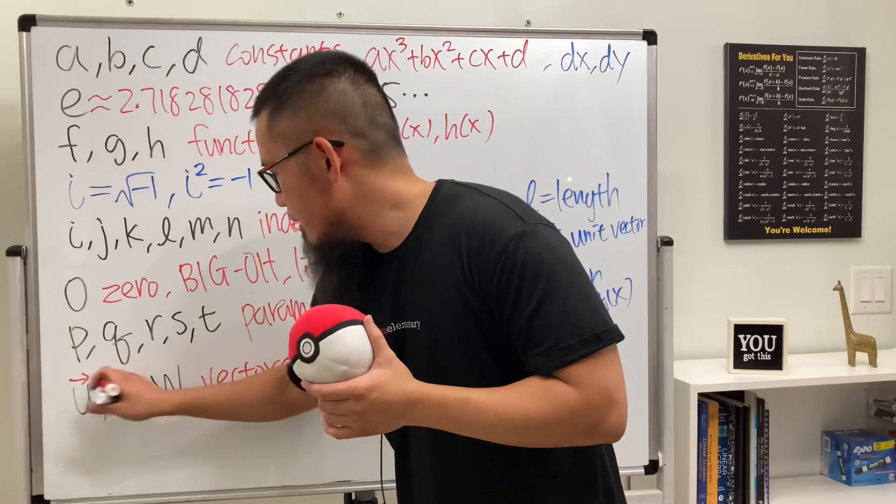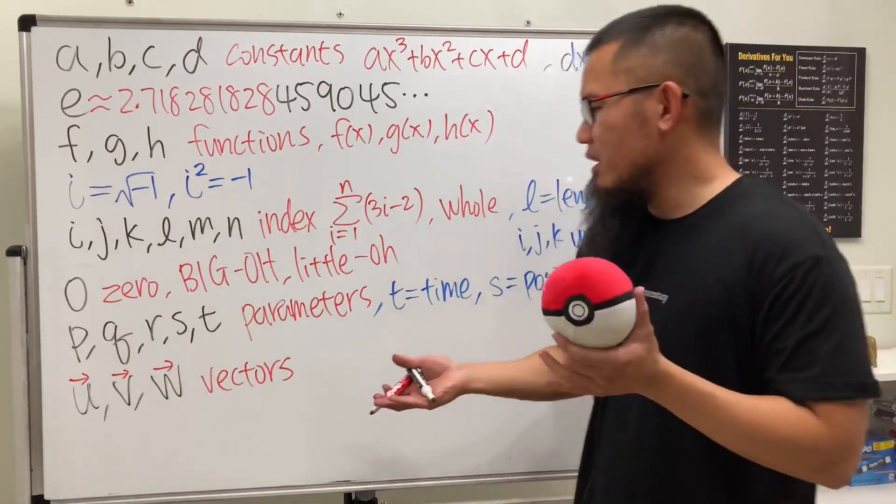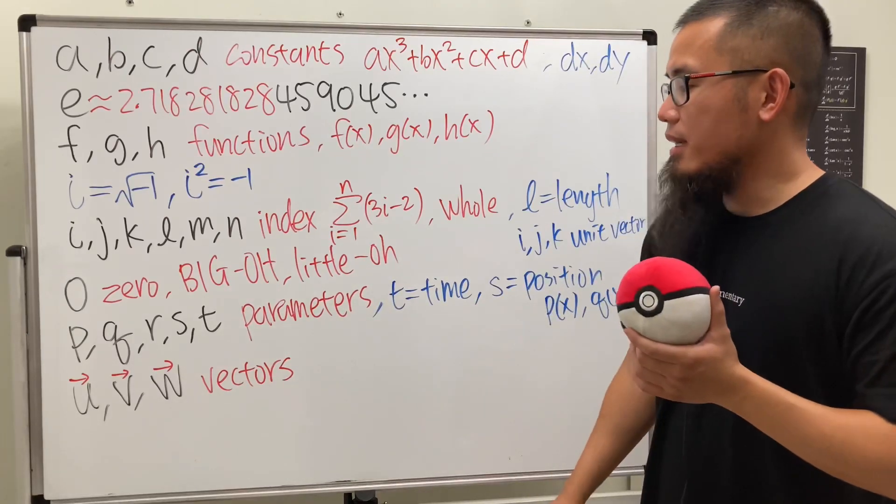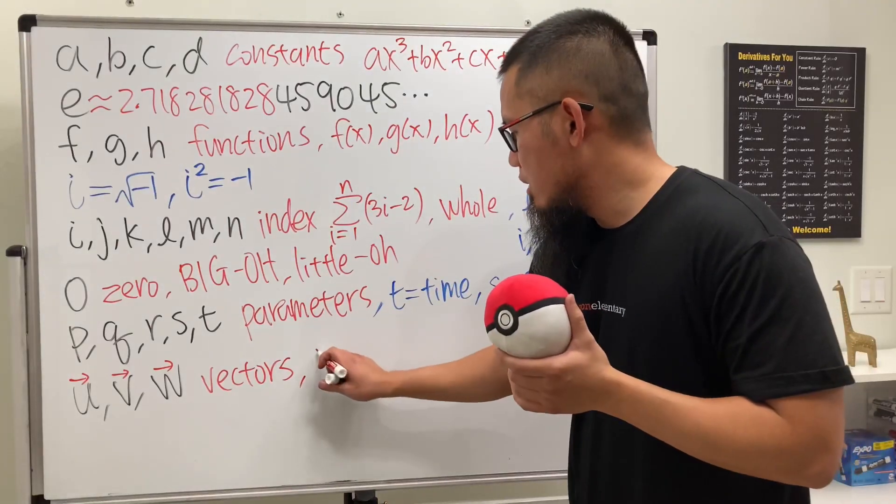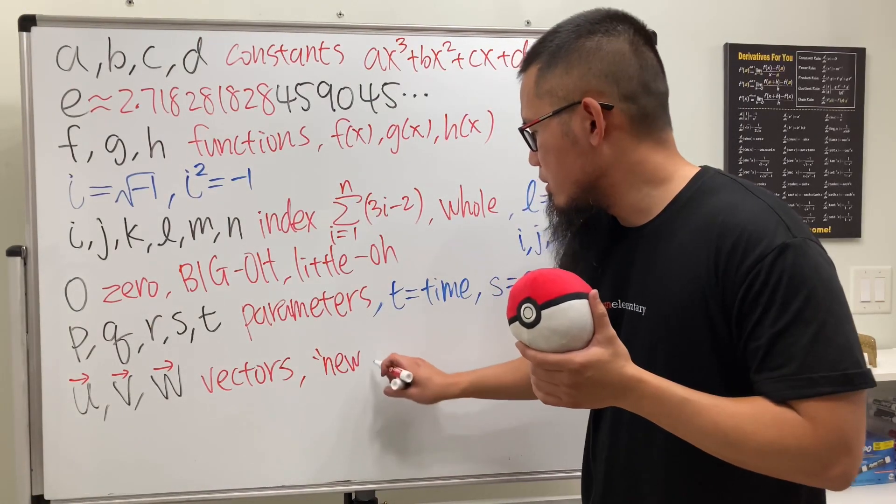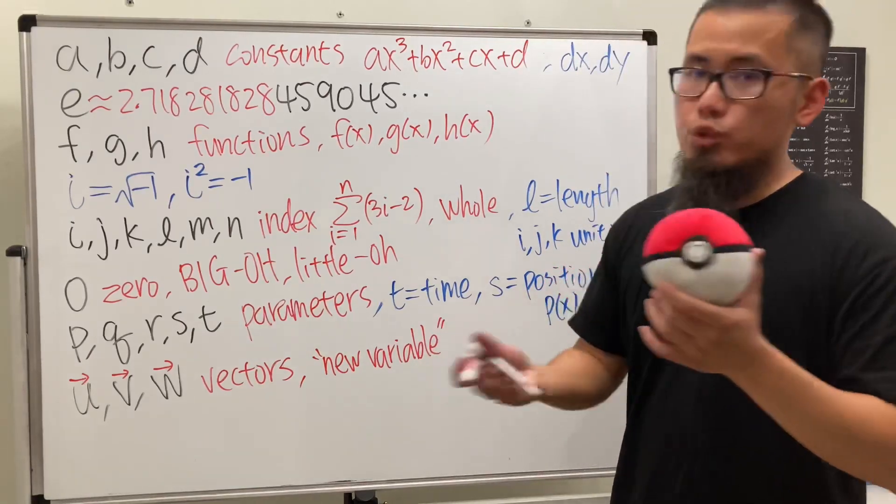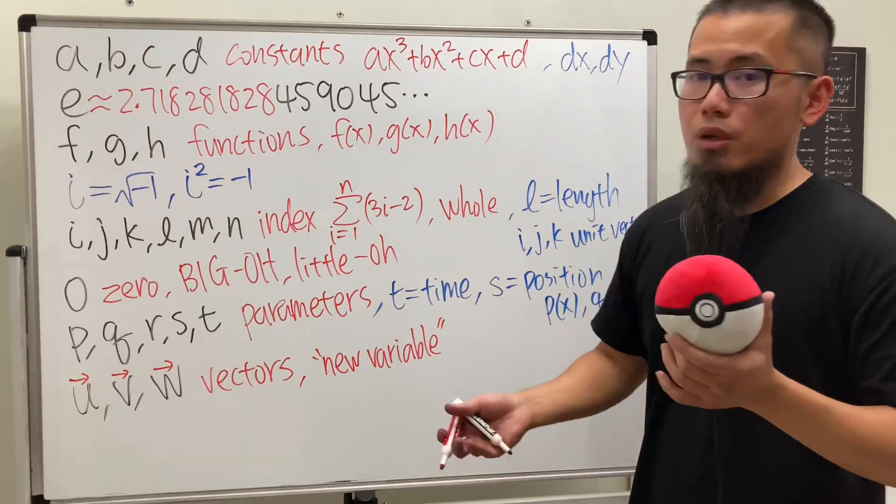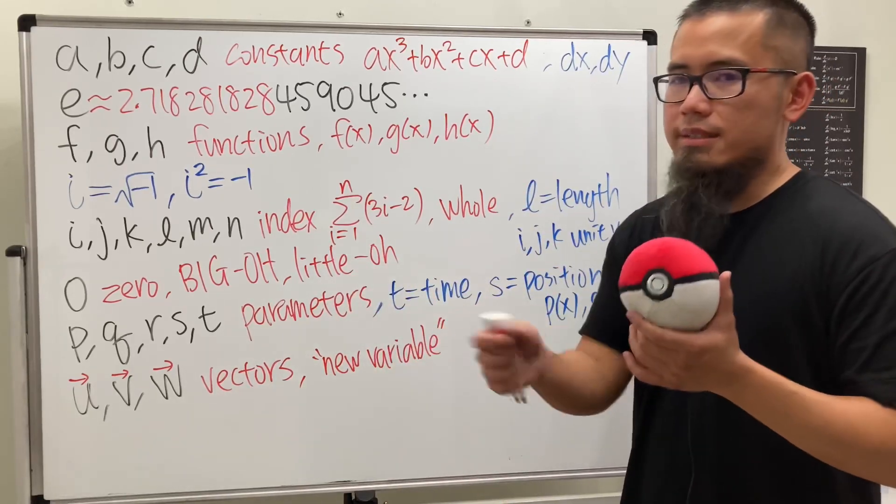Vectors, especially in maybe pre-calc you do this a lot. But when we use u it's kind of like the new variable. What I mean is when we do u-substitution in integrals, you write u = 5x + 2, then that's the new variable you're working with. Likewise for v and w, the neighbor letters.